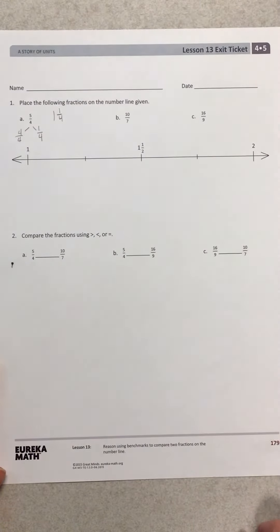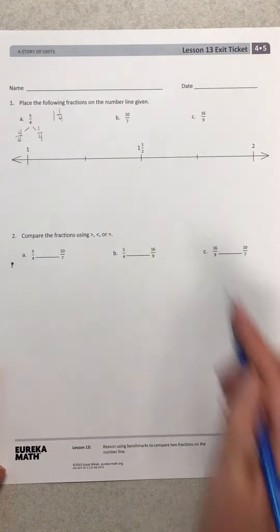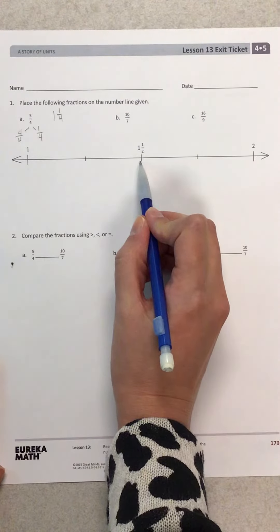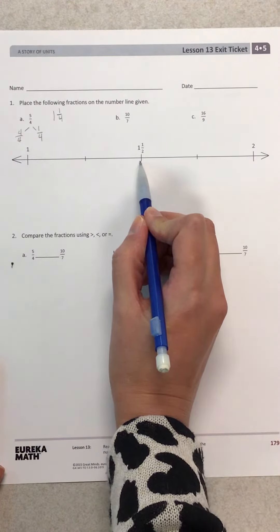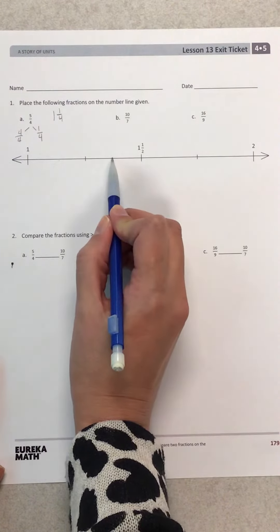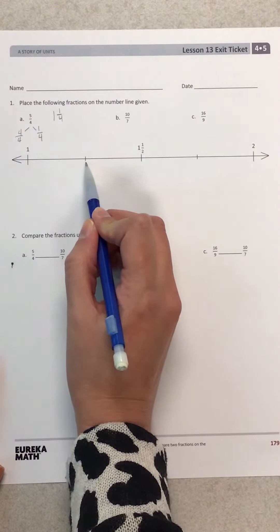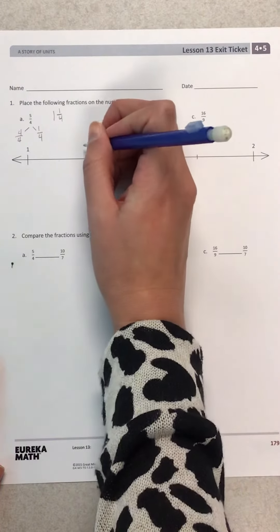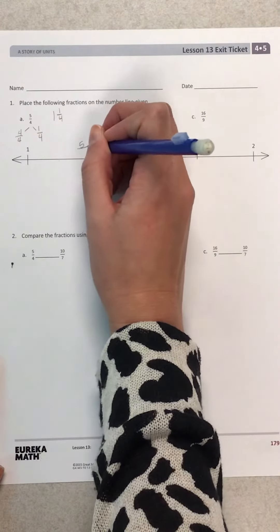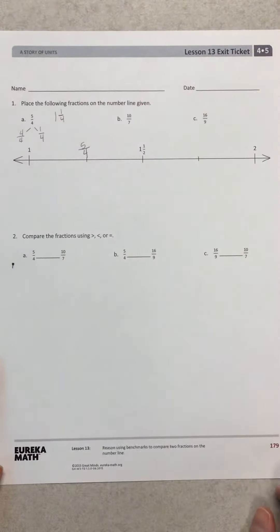That makes it a little bit simpler for me to plot on my number line. Here's 1 1/2. Well, I'm thinking there are 2 fourths in 1/2. So this tick mark right here must be my 1 1/4 or 5 fourths.